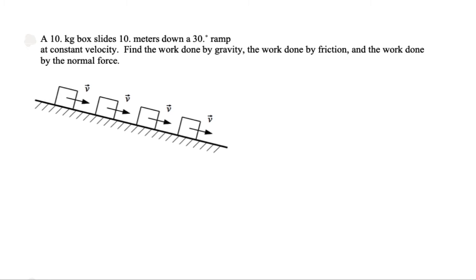A 10 kilogram box slides 10 meters down a 30 degree ramp at constant velocity. We want to find the work done by gravity, the work done by friction, and the work done by the normal force. So let's draw a free body diagram for it.